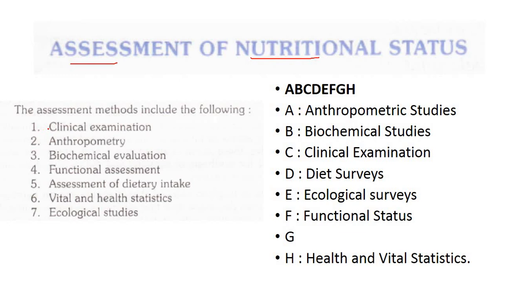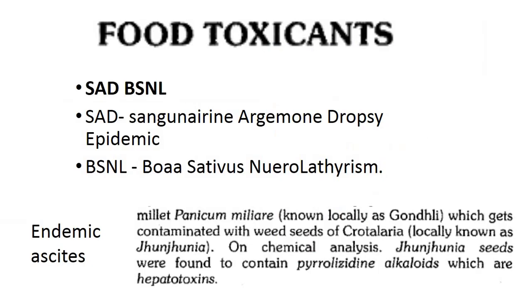In the nutrition chapter, for assessment of nutritional status, the methods include clinical examination, anthropometry, biochemical evaluation, functional assessment, and more. You can remember these with the mnemonic ABCDEFGH: Anthropometric studies, Biochemical studies, Clinical evaluation, Diet surveys, Ecological surveys, Functional status, G (no item), Health and vital statistics.